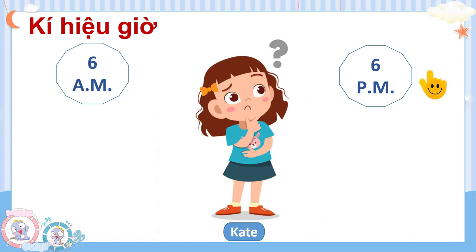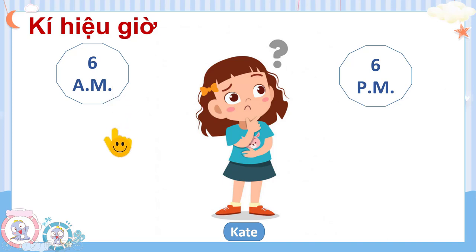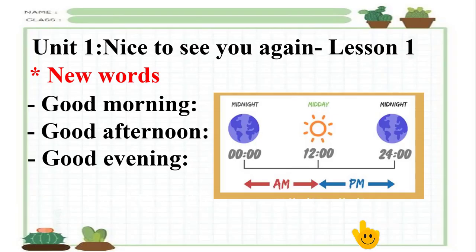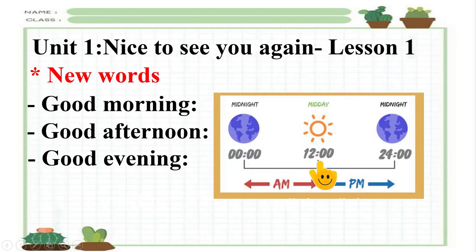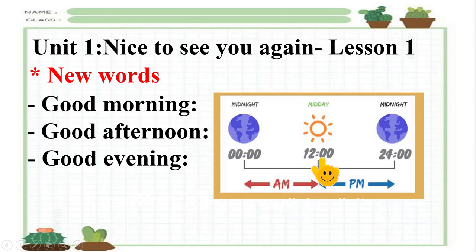Kate đang nhìn thấy 2 ký hiệu ở bên cạnh và bạn ấy không hiểu 2 ký hiệu này có nghĩa là gì. Một ngày có 24 giờ. Ở các nước phương Tây, từ 00h cho tới 12h trưa được gọi là giờ buổi sáng và được ký hiệu là AM. Còn từ 12h trưa cho tới 12h đêm sẽ được ký hiệu là PM.